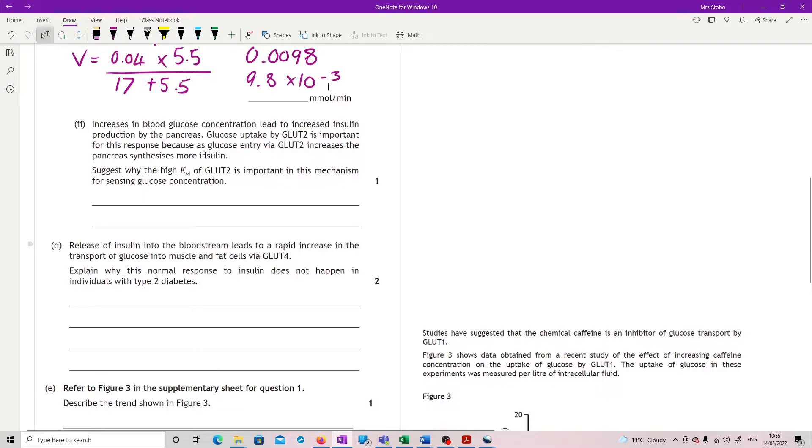Increases in blood glucose concentration lead to increased insulin production by the pancreas. Glucose uptake by GLUT2 is important for this response because as glucose entry via GLUT2 increases, the pancreas synthesizes more insulin. Suggest why the high Km of GLUT2 is important in this mechanism for sensing glucose concentration. So if you have a high Km, that means you've got a lower sensitivity in terms of the receptor, and you kind of need that because you don't want your blood glucose concentration, as soon as there's any glucose in your blood, to straight away produce more insulin because that would then take out your blood.